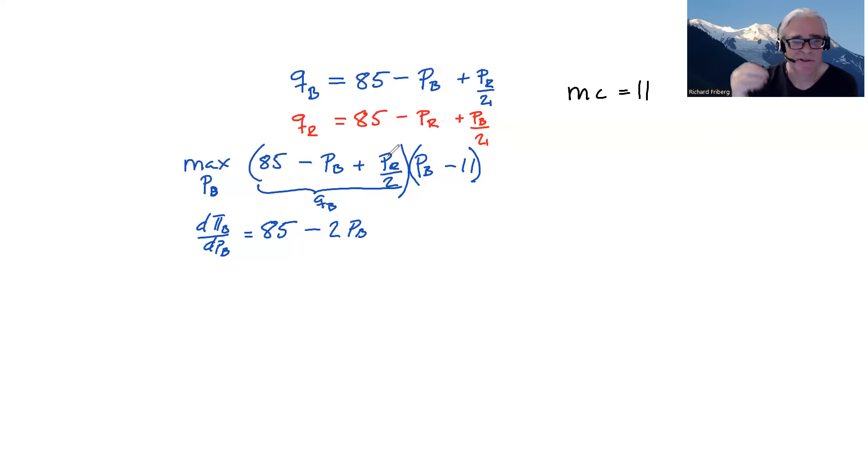You know, we could have different conjectures for the blue firm about how red would be responding to changes in my price, different guesses, etc. Just as in the case of Cournot, we leave that for later. We're saying, okay, now when blue is maximizing its profits, it's just treating the price of the red firm as a constant.